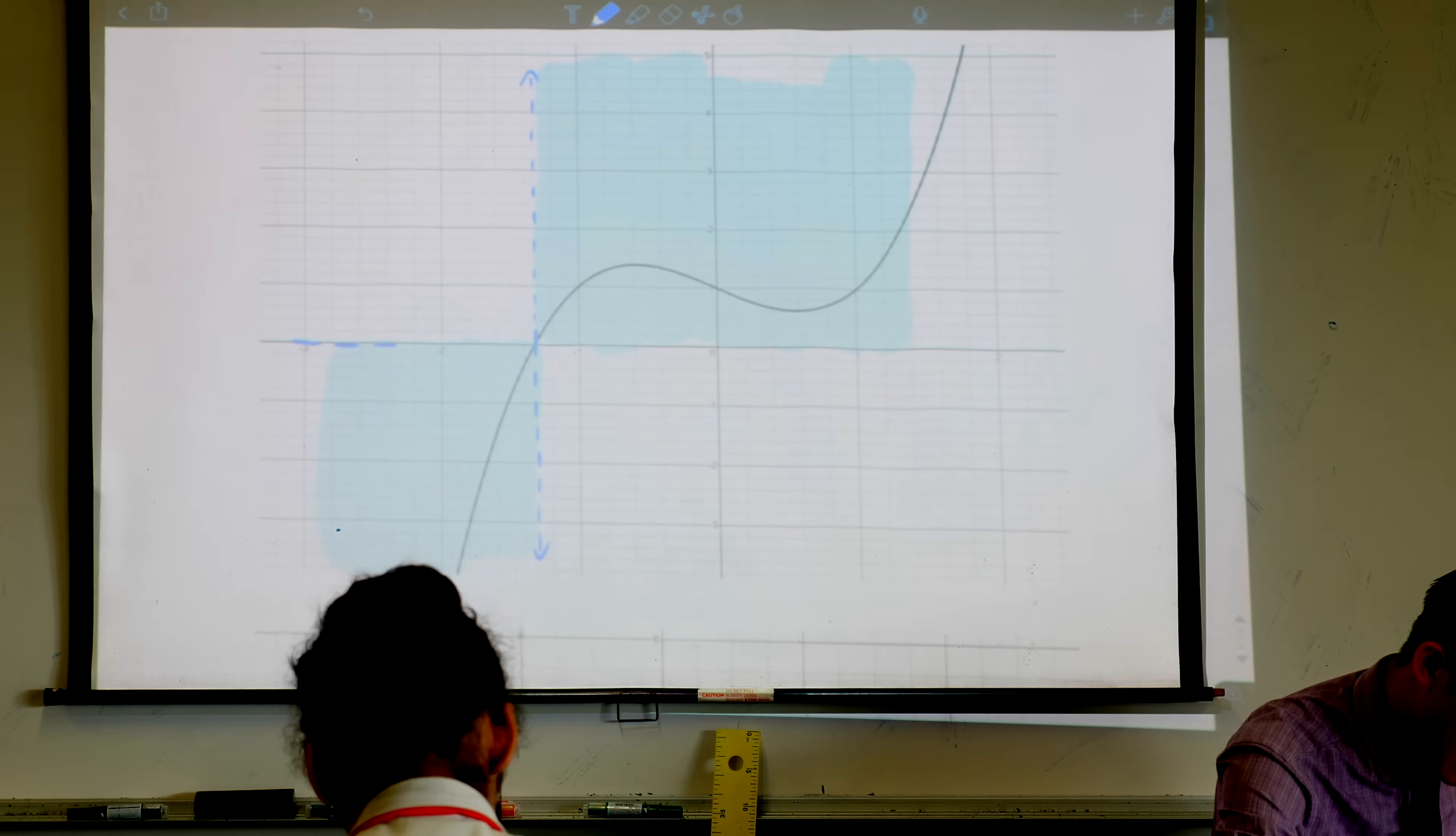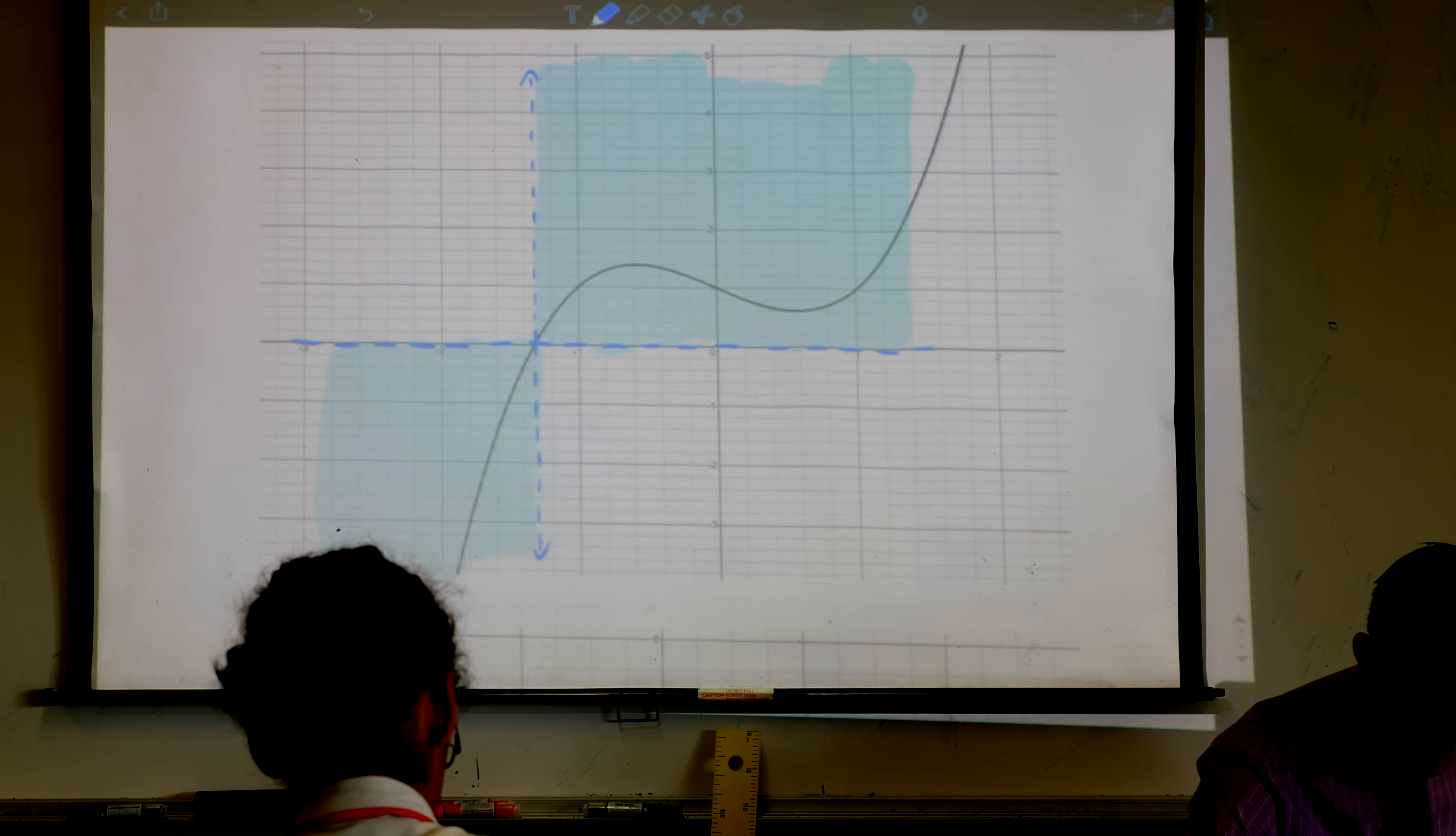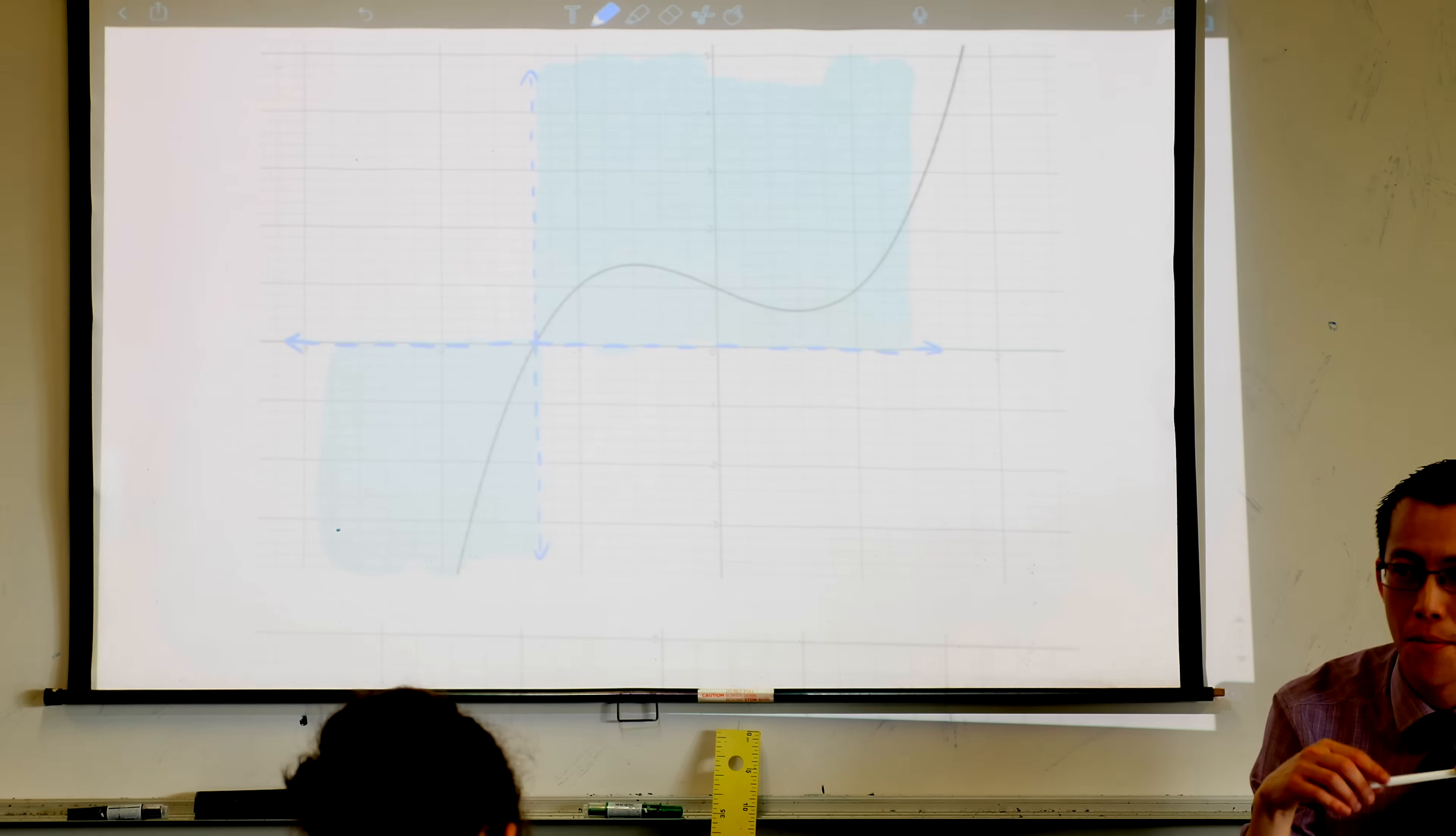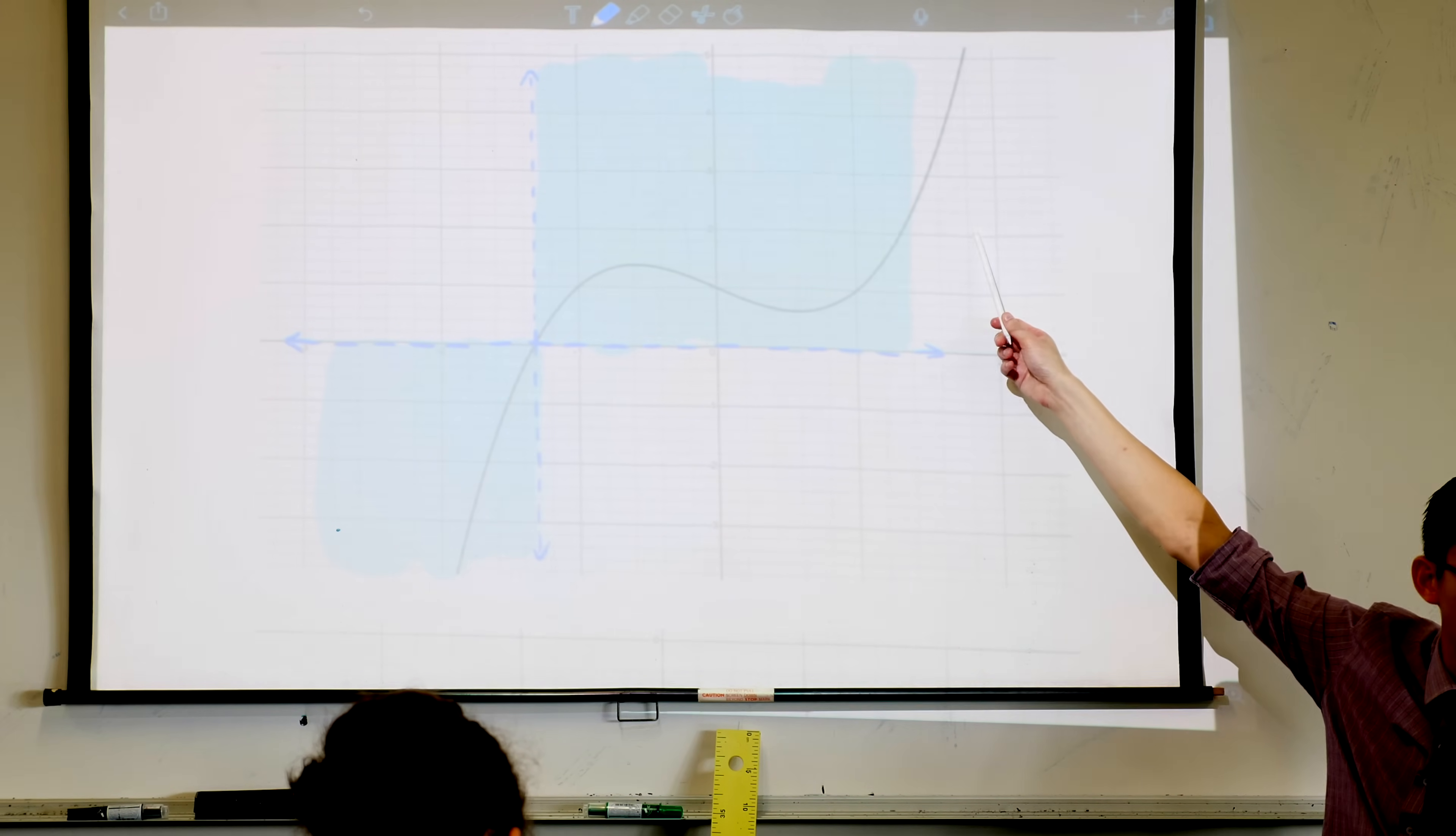Now my question to you is, how did I know that there was going to be a horizontal asymptote in this case? What information told me that? Why would my reciprocal be going towards zero? What's the original function doing over here on the right? The original function, what's it doing?